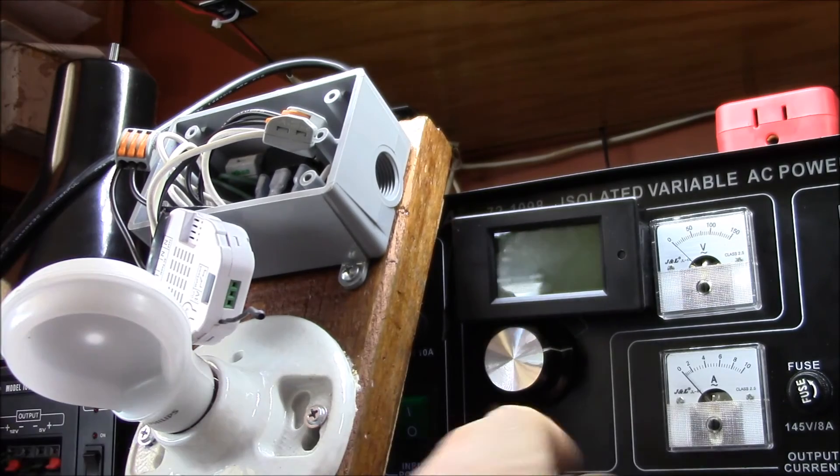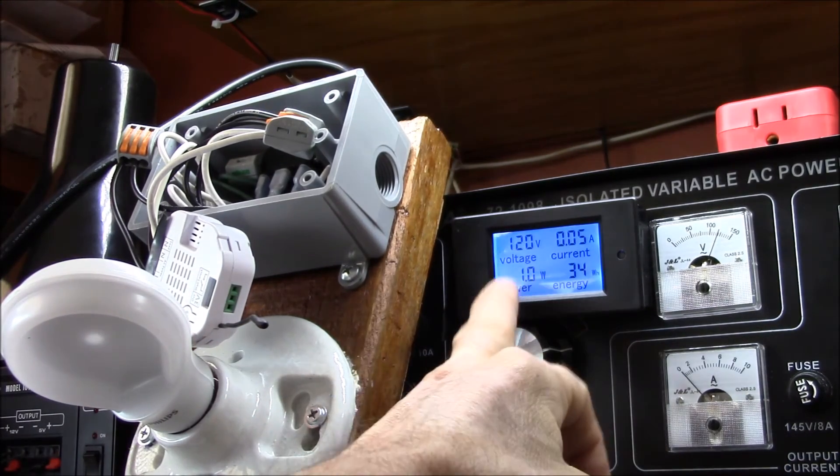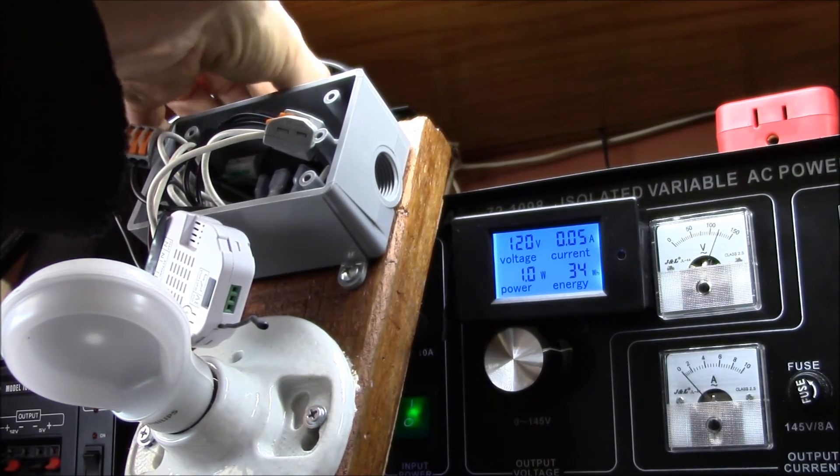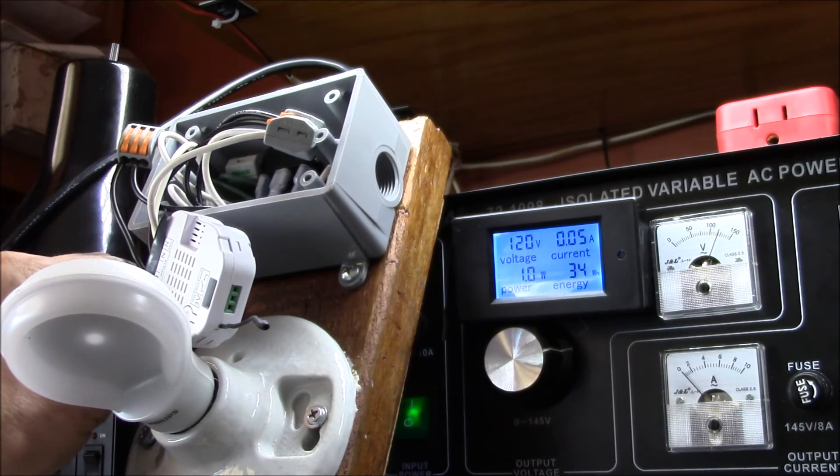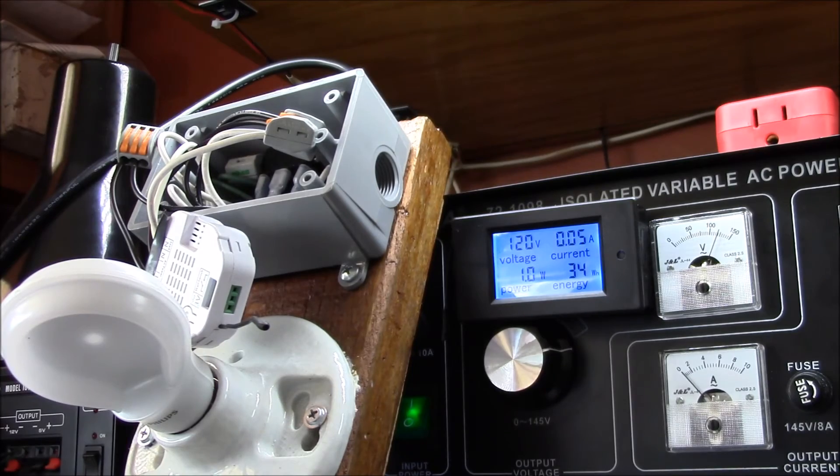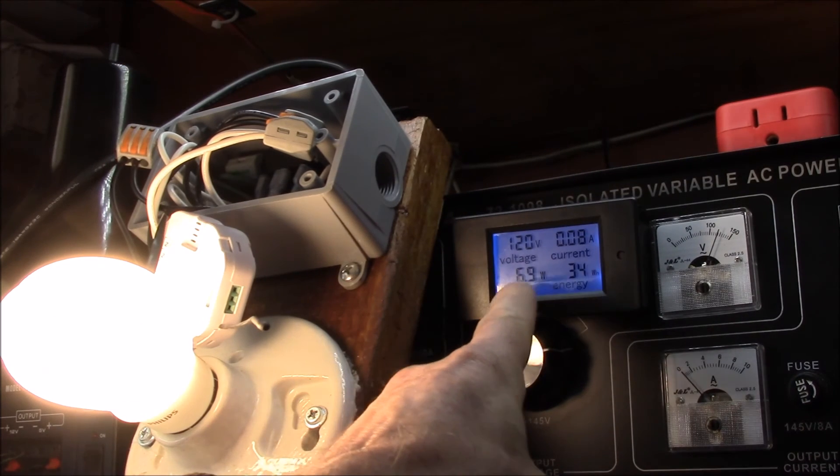Yeah, so let me show you the advantage to using a dimmer. So here I've got the dimmer back in the circuit and let's flip my switch over to light dimmer mode and we'll turn on my LED lamp. And the advantage of your light dimmer—one is you can dim your light—but also you can see now the power has dropped.